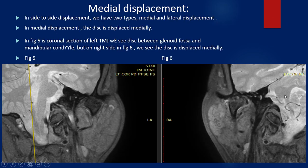Regarding medial displacement: this falls under side-to-side displacement, which includes medial and lateral directions. Figure 5 is a coronal section where we see the disc between the glenoid fossa and the mandibular condyle, but displaced to the medial side.